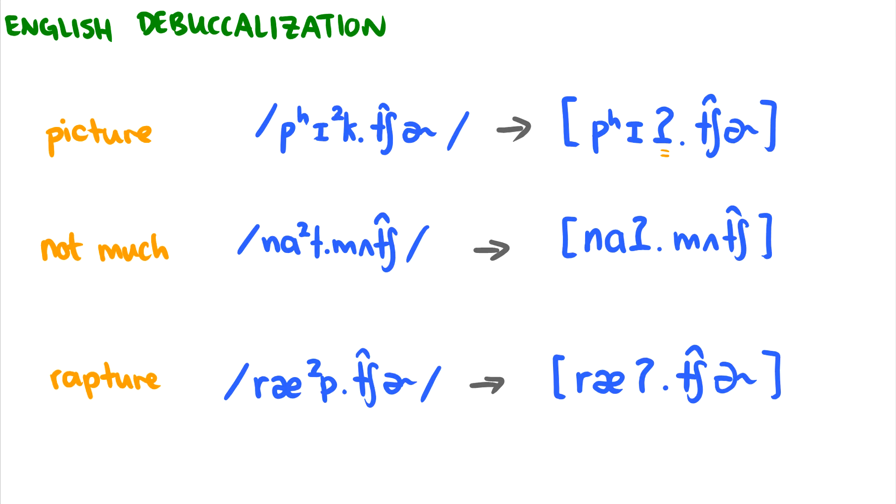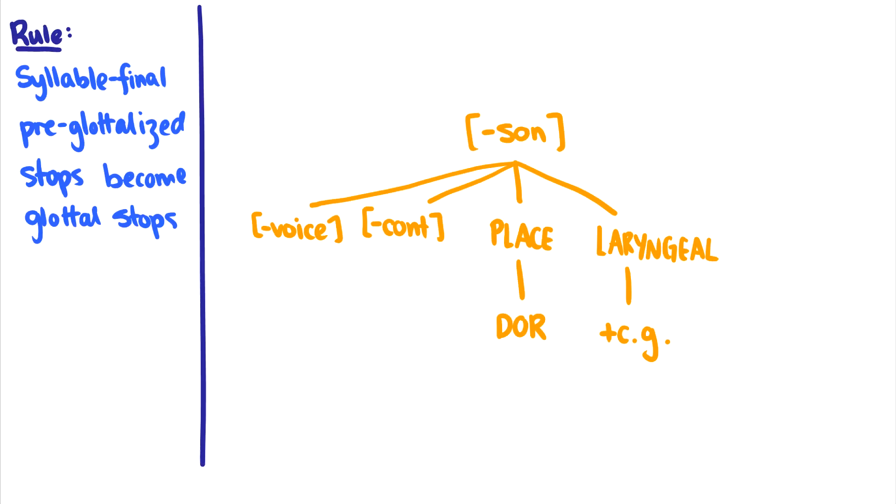What we can see here is that we have a K, a T, and a P. These are all voiceless stops, and they're losing their place essentially. So the benefit of feature geometry is that even though these three have different places, we can probably capture that change in just one rule. The rule essentially is that syllable-final pre-glottalized stops become glottal stops. What I have here is the tree for a pre-glottalized stop, and this is specifically our dorsal, the case where we have the K going to just the glottal stop.